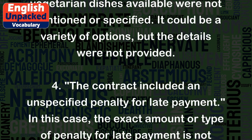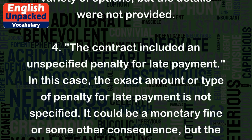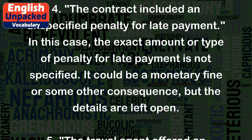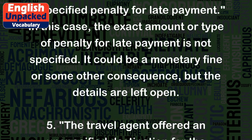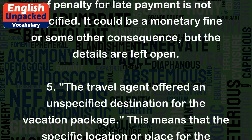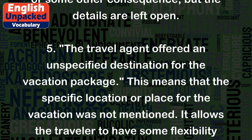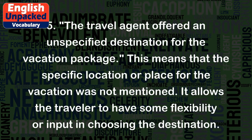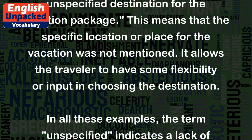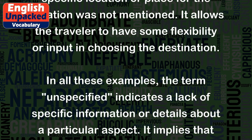Four: The contract included an unspecified penalty for late payment. In this case, the exact amount or type of penalty for late payment is not specified. It could be a monetary fine or some other consequence, but the details are left open. Five: The travel agent offered an unspecified destination for the vacation package. This means that the specific location or place for the vacation was not mentioned. It allows the traveler to have some flexibility or input in choosing the destination.